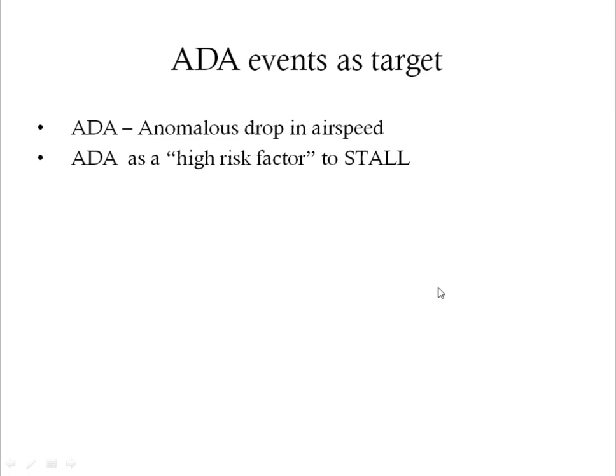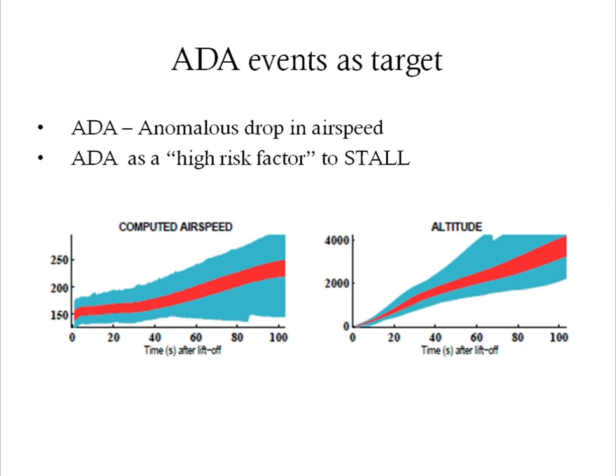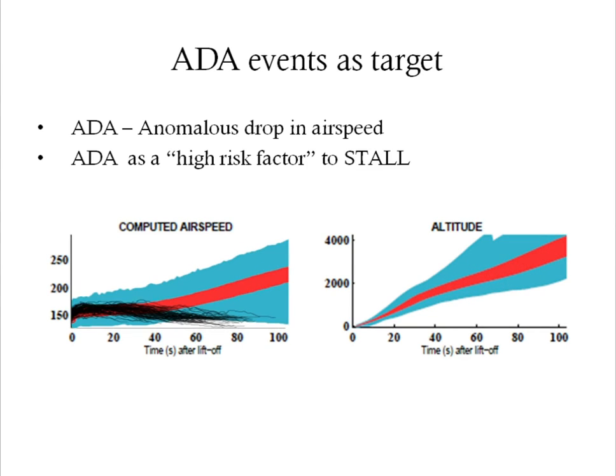In this work, we consider the drop in airspeed events as the target event and mine for precursors to these events. During a normal takeoff, the airspeed has an increasing trend as shown in the figure. However, for some flights, the airspeed drops, shown by black lines in the figure. If the drop in airspeed is sustained for at least 20 knots, then we flag an ADA event. The ADA event is a high-risk factor which, left uncorrected, may lead to a stall.